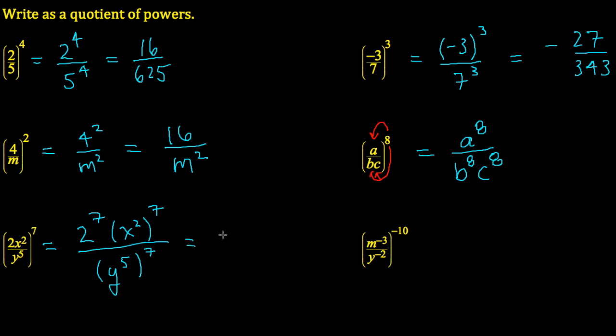The 2 to the 7 is 128. The x squared raised to the exponent 7 - well, we use our power of a power rule. That means I take these 2 and multiply them. So I'm going to take 2 times 7. That becomes x to the exponent 14.